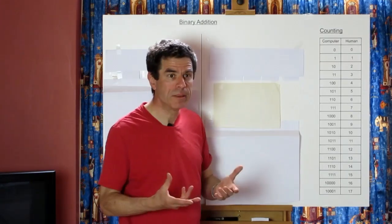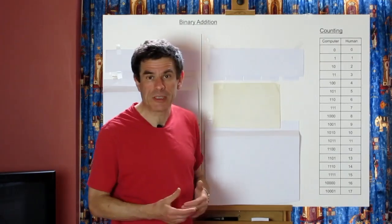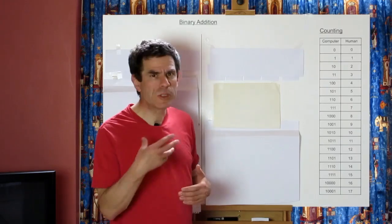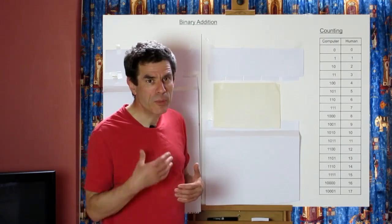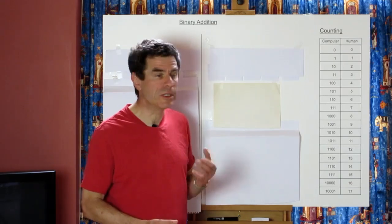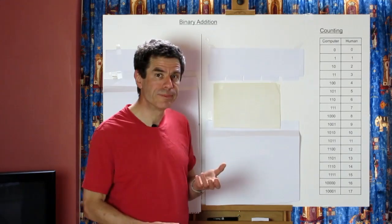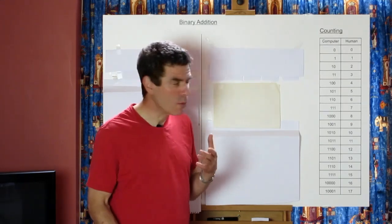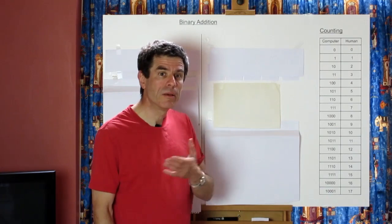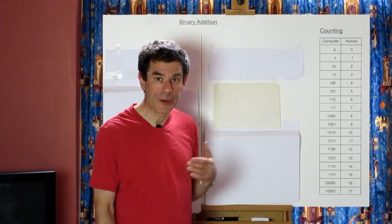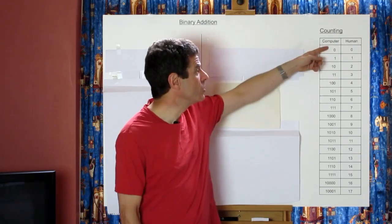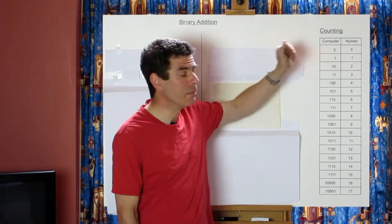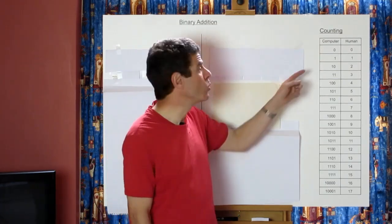Now there's nothing magic about base 10. In fact humans have used other number bases in the past. We can use whatever number base we find most convenient, and in computers we find that the most convenient is base 2. So we're going to use a base 2 system, otherwise called binary. It's base 2, so we have two digits: 0 and 1. And that lets us count up to 1.